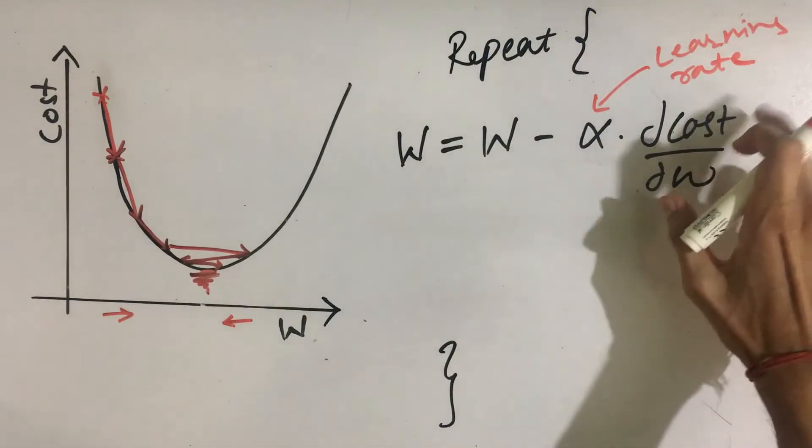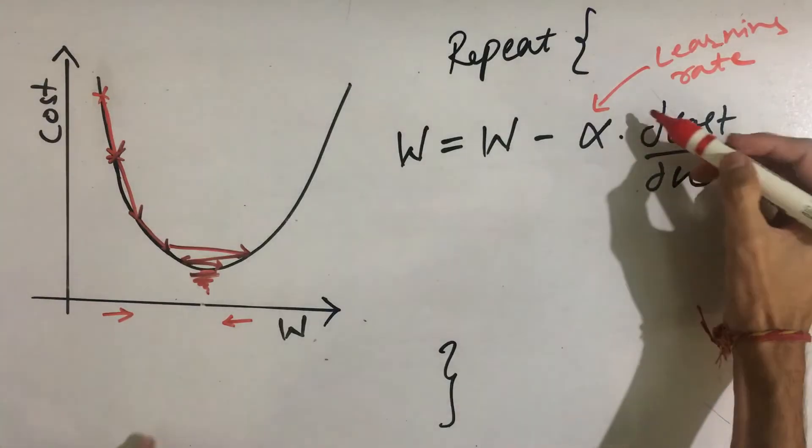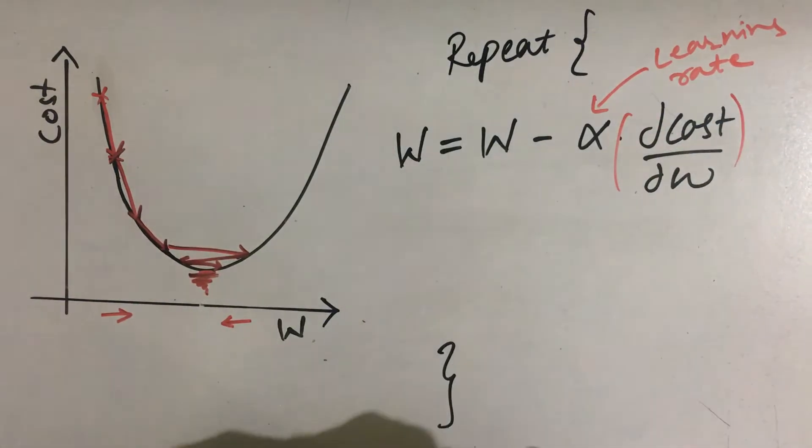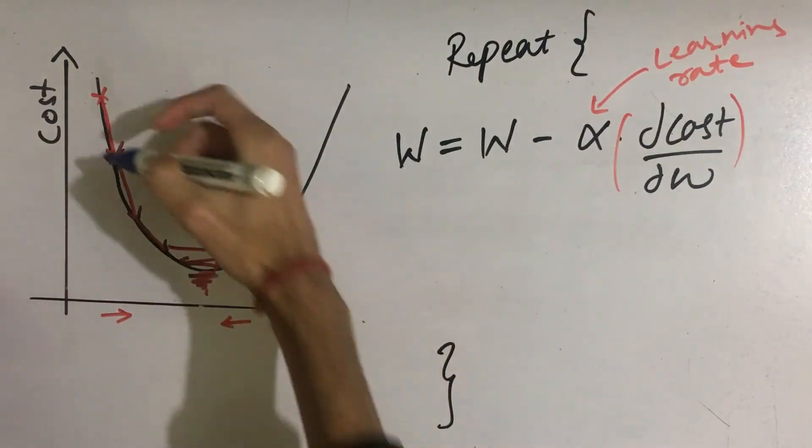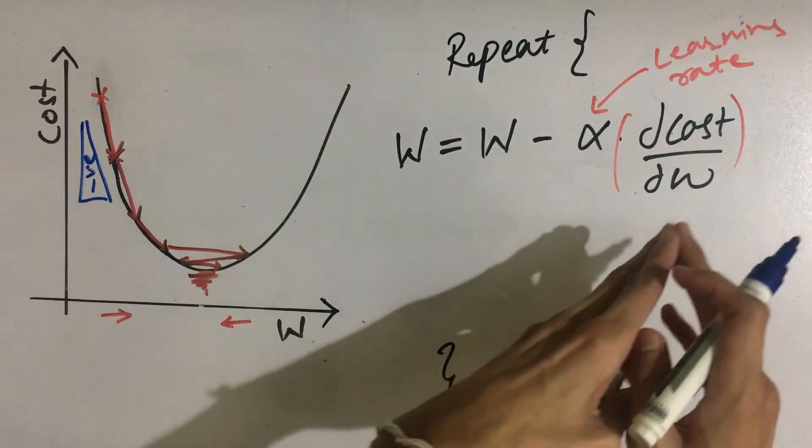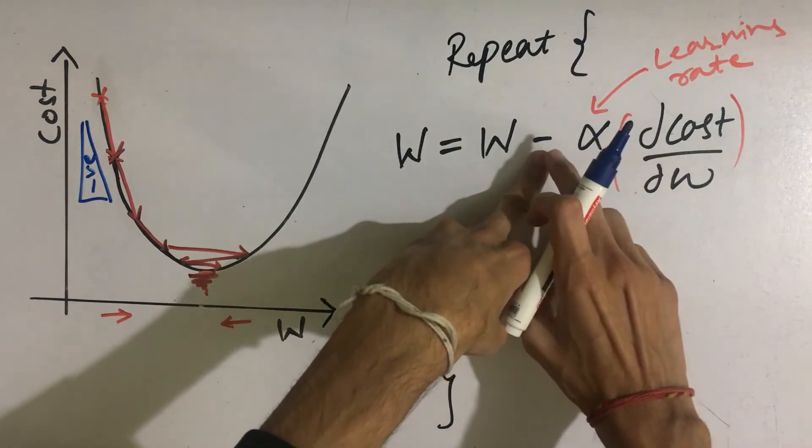And we are multiplying it by del cost by del w. So this is the derivative of cost with respect to the w. So the derivative represents the slope of this graph. So let's say if we are on this half, then the slope is negative. So we are multiplying a negative quantity with another negative, so it will become plus.